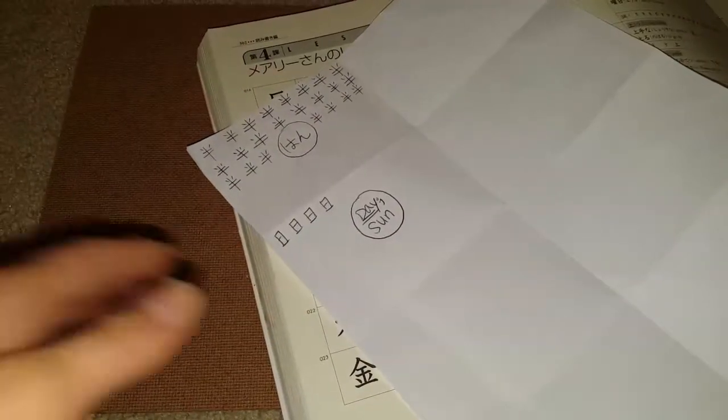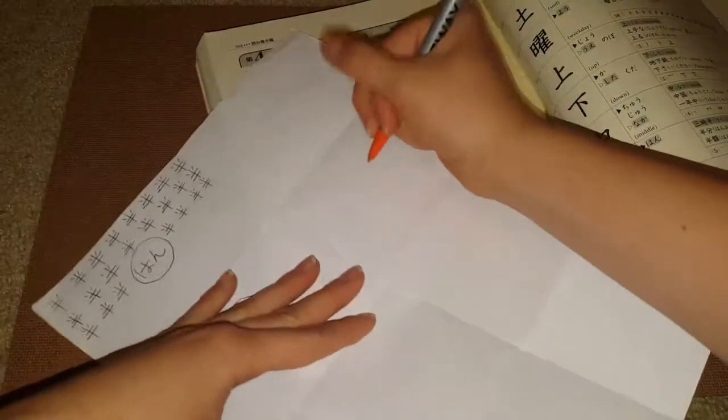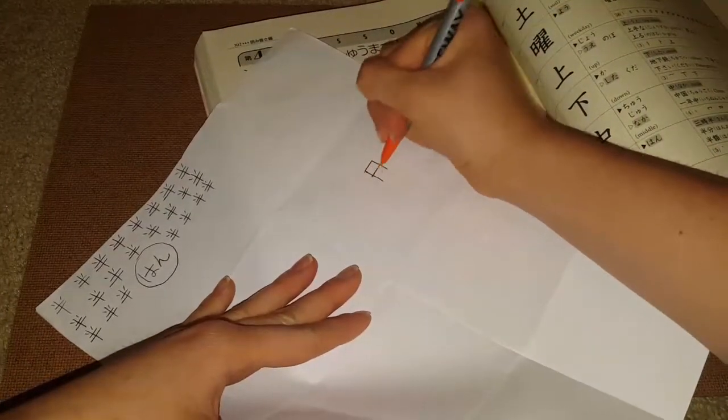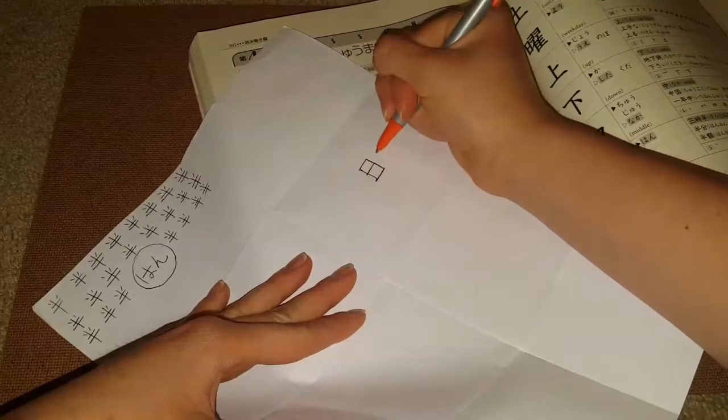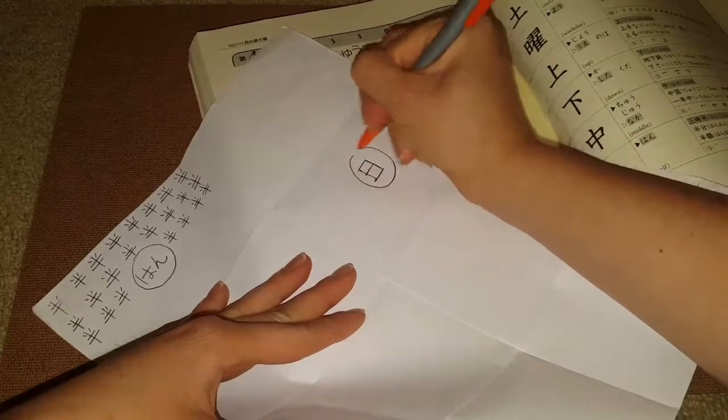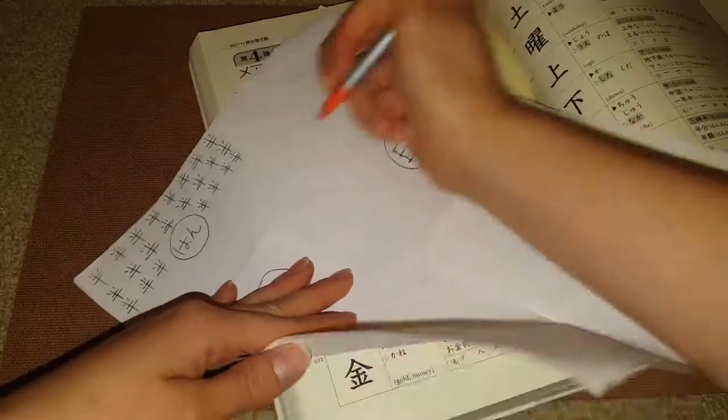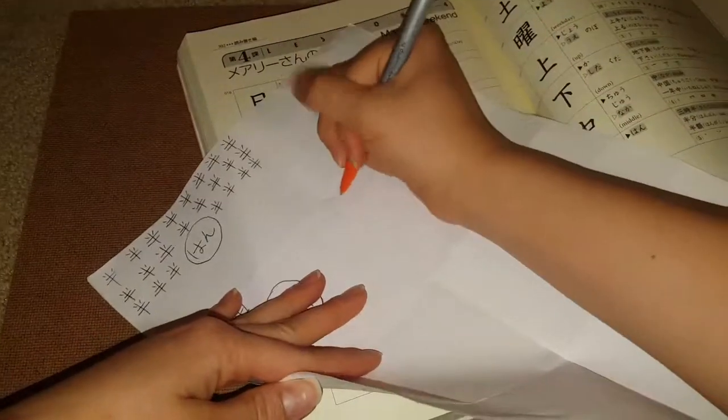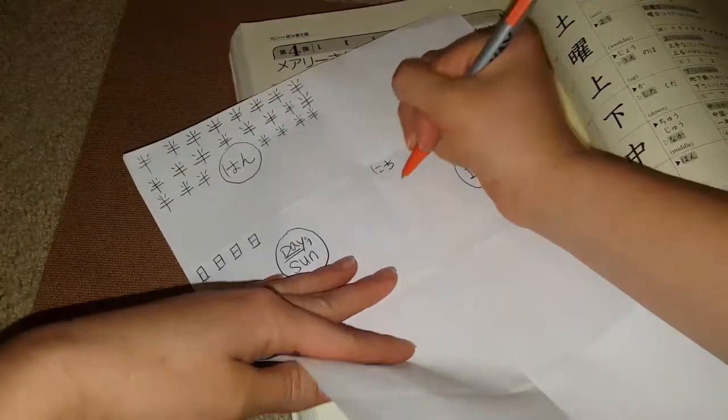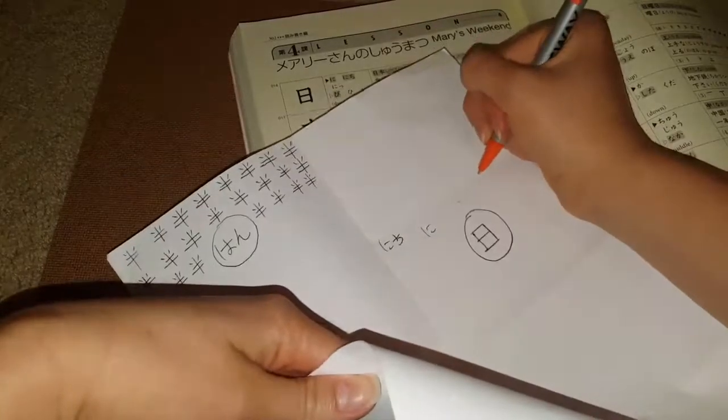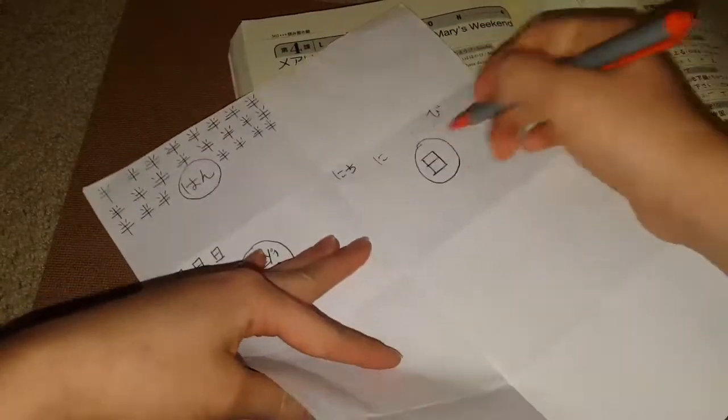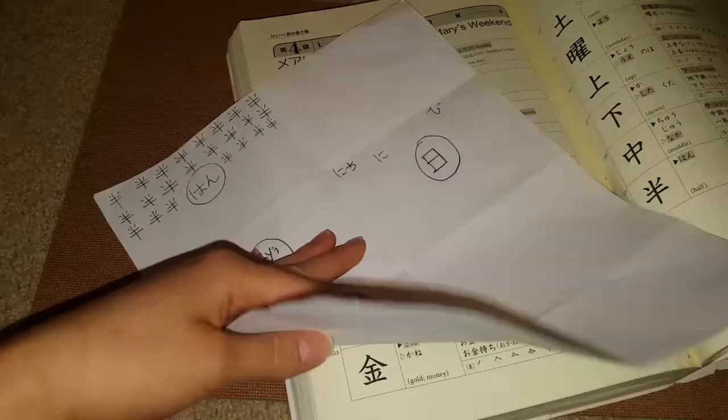You could also do it this way. If you wanted to memorize it in hiragana, you could put the actual kanji in the middle of the circle. And then you can write all the different ways that you would pronounce it and you could just write it around. But yeah, I don't have much time on my camera.